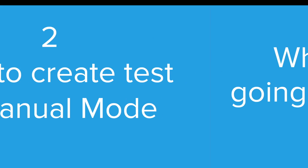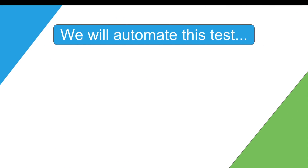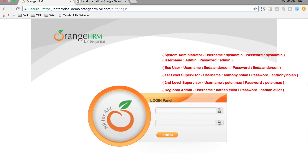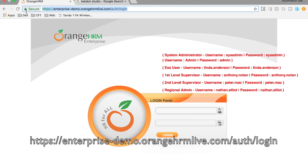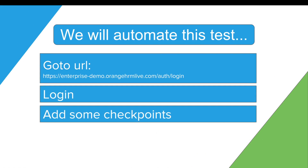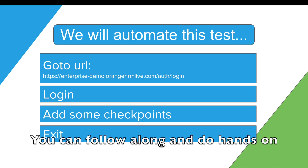Now we have to create our test in manual mode. What we are going to automate is a scenario where we will go to a particular URL, which is a demo site for Orange HRM. This is the URL — I will make it available in the video description. Here we will do a login, add some checkpoints, and then exit.